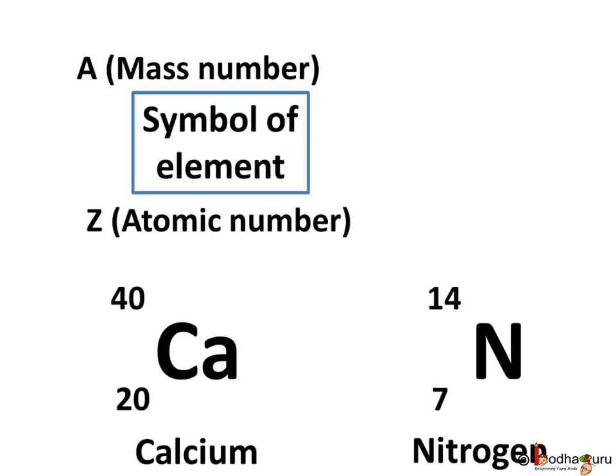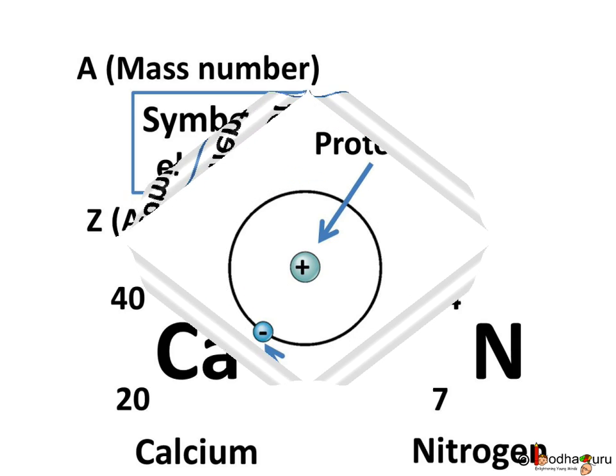Here, 40 is the mass number and 20 is the atomic number. Also, the nitrogen atom is represented as the symbol N with 14 as the superscript and 7 as the subscript, where 14 is the mass number and 7 is the atomic number of element nitrogen.